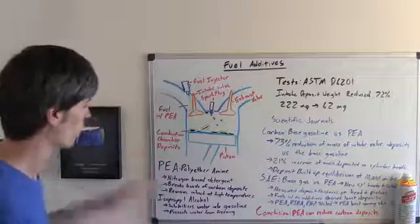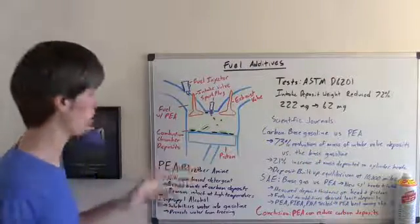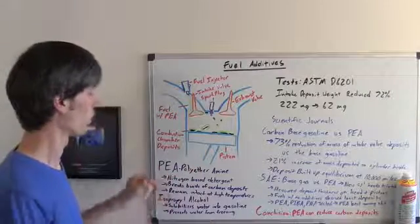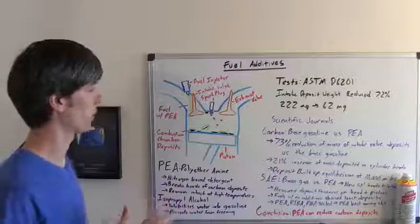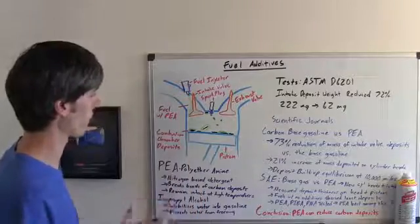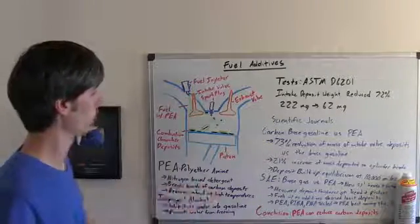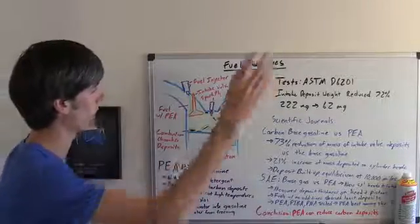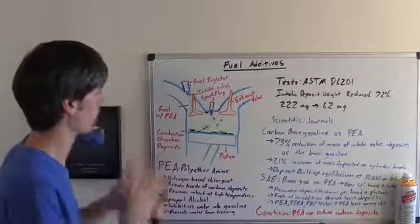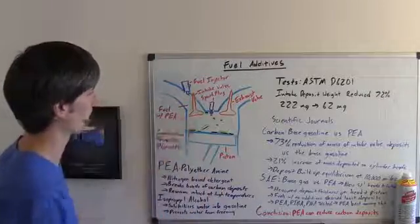So how does Gumout work? Well one of the main cleansing agents is PEA or polyetheramine. This is a nitrogen-based detergent used to break deposits off of whatever they've bonded to. It breaks the bonds down of carbon deposits and then those particles will pass out through your exhaust once they've solubilized with the gasoline.